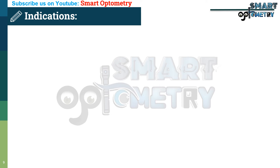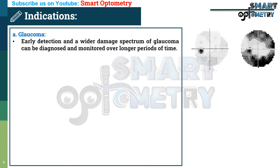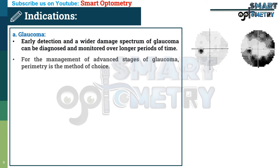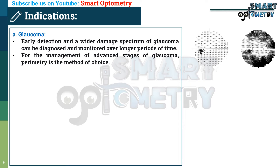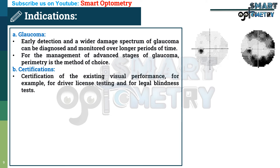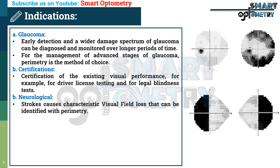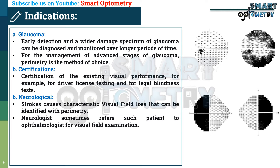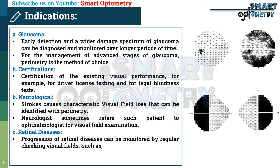Indications of perimetry: 1. Glaucoma — Early detection and a wider damage spectrum of glaucoma can be diagnosed and monitored over longer periods of time. For the management of advanced stages of glaucoma, perimetry is the method of choice. 2. Certifications — Certification of existing visual performance, for example for driving license testing and legal blindness testing. 3. Neurological — Neurological conditions like strokes cause characteristic visual field loss that can be identified with perimetry; neurologists sometimes refer such patients to ophthalmologists for visual field examination. 4. Retinal diseases — Progression of retinal diseases can be monitored by regular checking of visual fields, such as retinitis pigmentosa, diabetic retinopathy, etc.